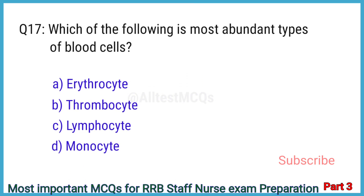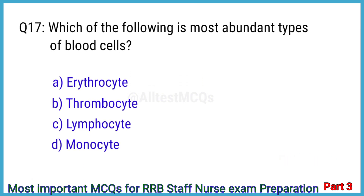Question No. 17. Which one of the following is the most abundant type of blood cell? The right answer is Option A: Erythrocyte.